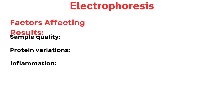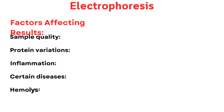Additional factors affecting results: inflammation can cause a significant increase in C-reactive protein (CRP), creating a band in the beta or gamma region. Certain diseases — such as monocytic leukemia — may show increased lysozyme, resulting in a band in the post-gamma region. Hemolysis, or red blood cell breakdown, can introduce hemoglobin into the sample, causing an additional band to appear.